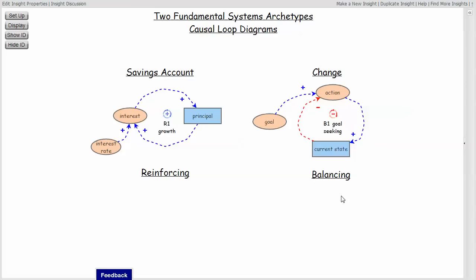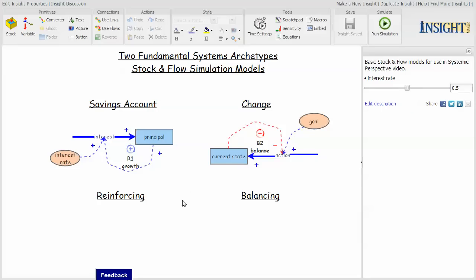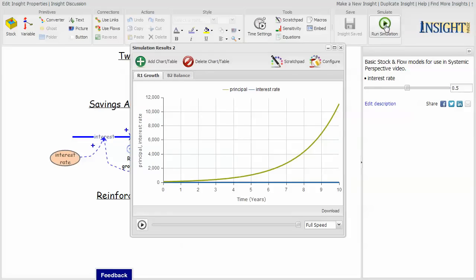I will present each archetype from a causal loop perspective and from a stock-and-flow simulation perspective. These are the two structures on the previous page only implemented as stock-and-flow simulation models, so that when the simulation is run, you get an implication of the interaction of the elements in that structure.